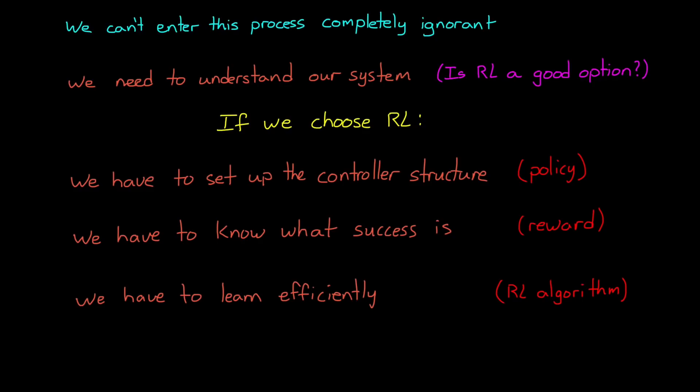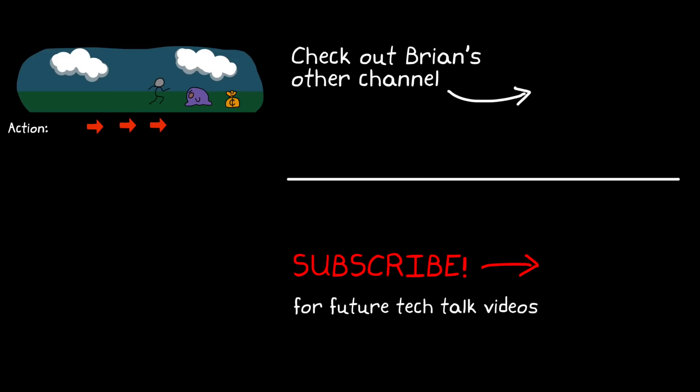In the next few videos, we'll expand on all of this by looking at the workflow of reinforcement learning in more detail. We'll look at the structure of the policy, and introduce neural networks. And we'll talk about how crafting the proper reward function impacts your final result. And we'll look at a very high overview of some interesting learning algorithms. So if you don't want to miss the next Tech Talk video, don't forget to subscribe to this channel.